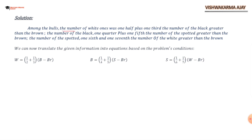Among the bulls, the number of white equals one half plus one third times the number of black greater than brown, so W = (1/2 + 1/3)(B − Br). Similarly, the number of black B equals one quarter plus one fifth, and since spotted is greater than brown, we multiply it with S − Br. The number of spotted equals one sixth plus one seventh times the number of white greater than brown.